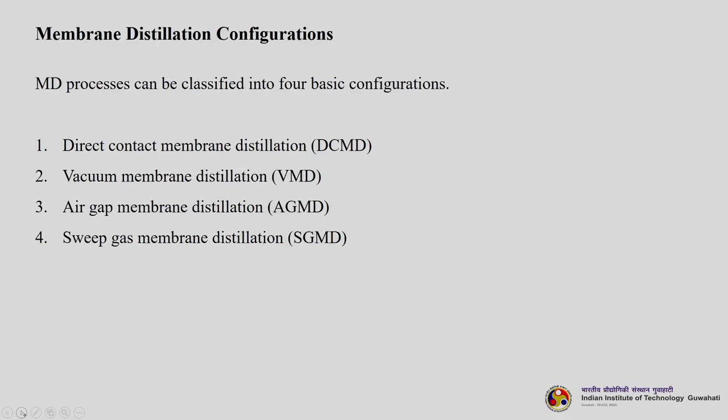There are four different types of membrane distillation configurations. The first is direct contact membrane distillation (DCMD), where the feed phase is in direct contact with one upstream side of the membrane. Then there is vacuum membrane distillation (VMD), air gap membrane distillation (AGMD), and sweep gas membrane distillation (SGMD). There are basically four designs for the membrane distillation unit depending on the application and requirements.